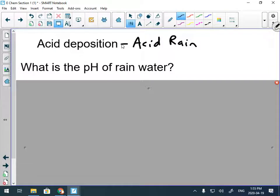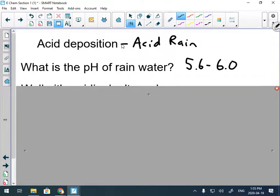What's the pH of normal rainwater? Does anybody know? The pH of normal rainwater is like 5.6 to 6. It's acidic.